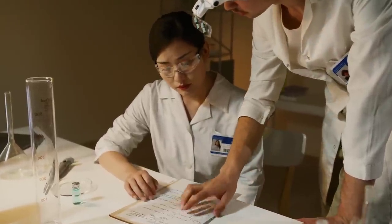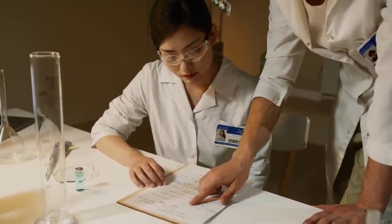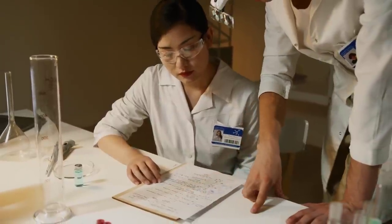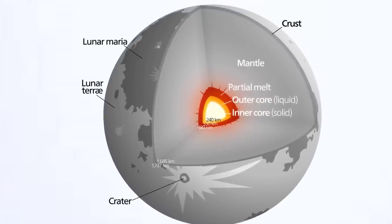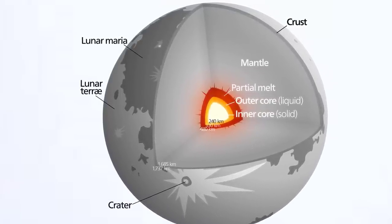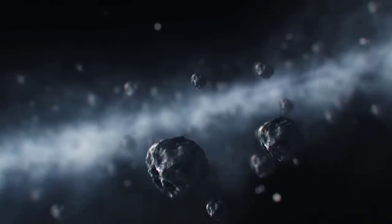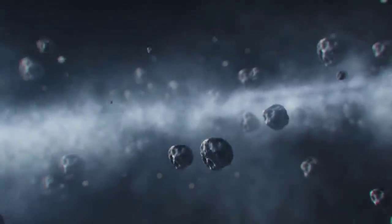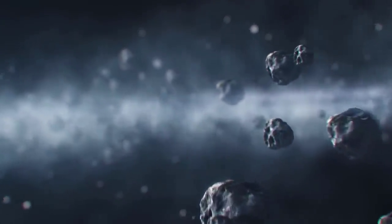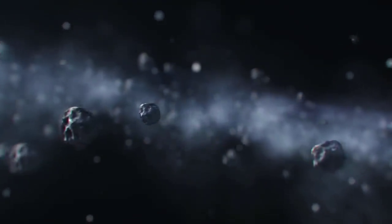Studying these deep moonquakes helps scientists gain insights into the Moon's internal structure, such as the thickness and composition of its crust, mantle, and possibly even the core. By analyzing the characteristics of these seismic events, researchers can unravel the Moon's geological history and its evolution over billions of years. Meteorite impact moonquakes arise when these celestial visitors crash into the Moon, releasing an immense amount of energy. The impact generates shockwaves that reverberate through the lunar crust, triggering moonquakes in the process.